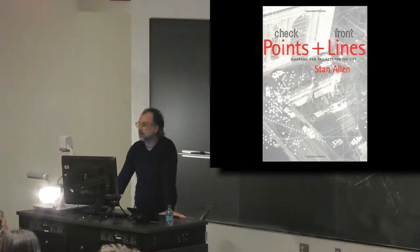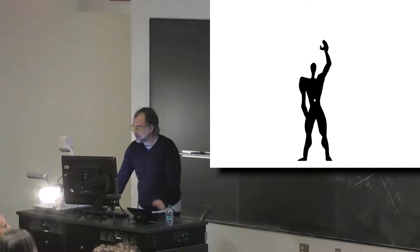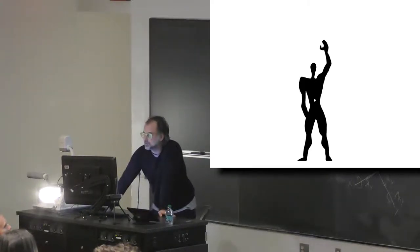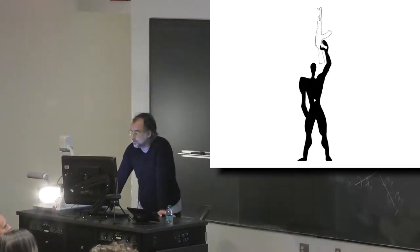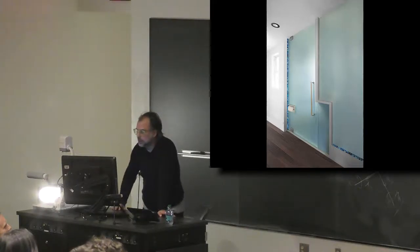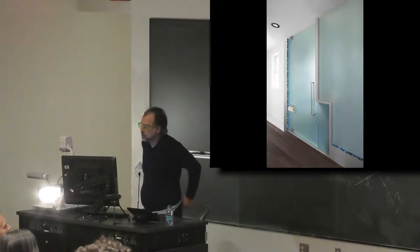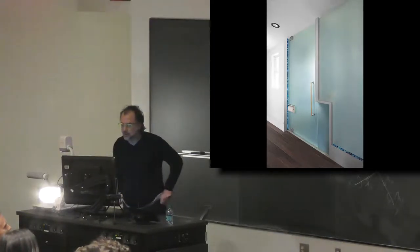I chose the title Checkpoints and Frontlines as a take on a book that was published probably over a decade ago by Stan Allen. My idea behind the title is to rethink architecture not in terms of an independent, autonomous discipline of points and lines, but to think about it as a politicized endeavor, where points are checkpoints and lines are frontlines. How can we learn from architecture, not only as a formal exercise or an aesthetic exercise, but as an exercise in the way it can help shape our critical thinking of the society we live in?